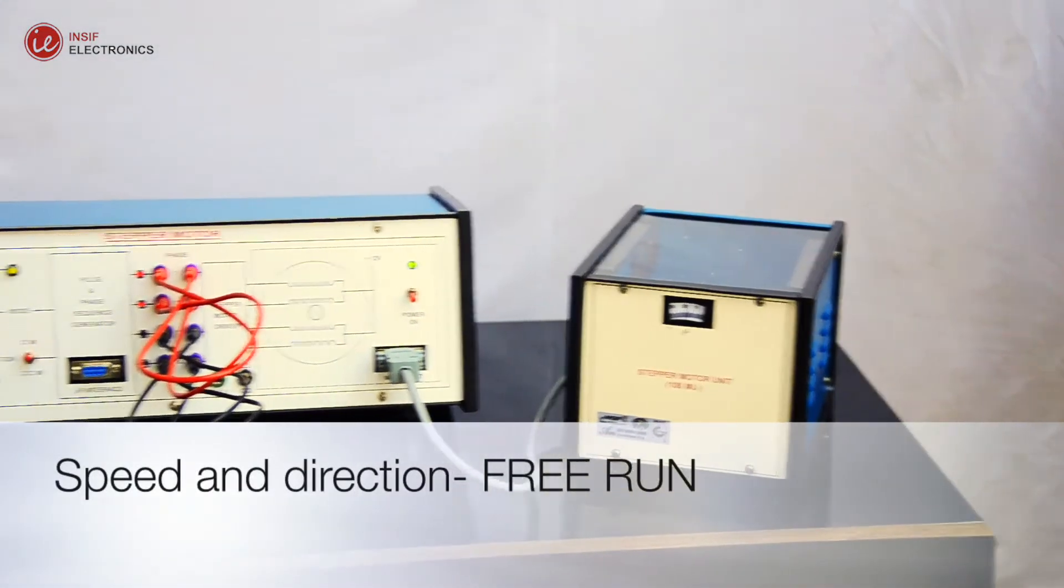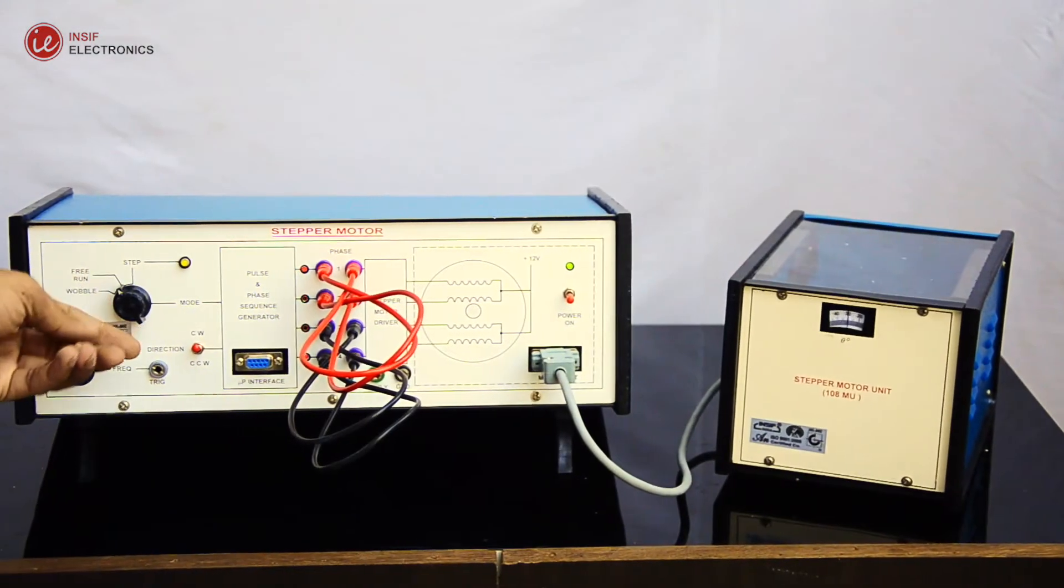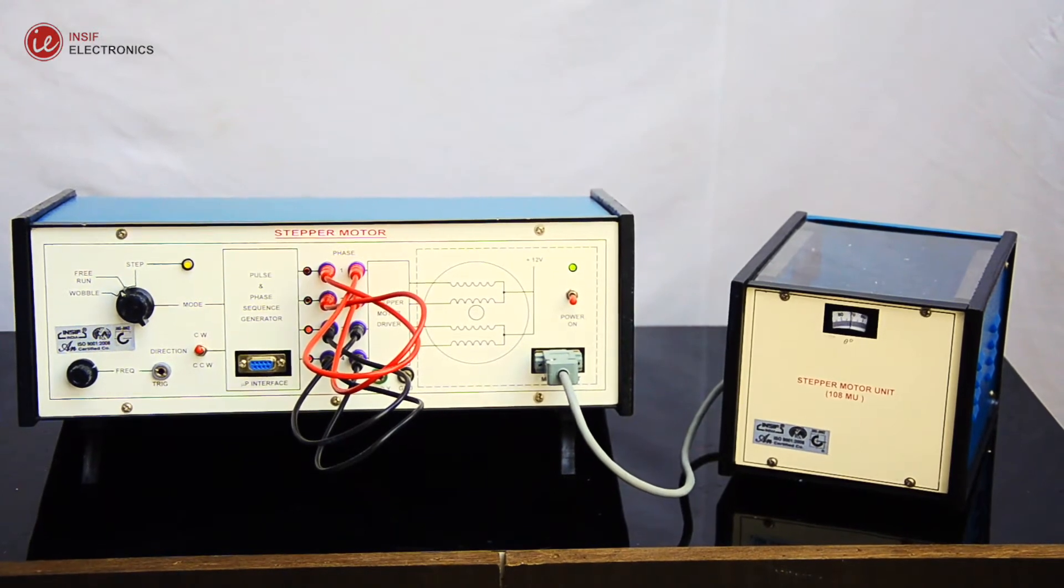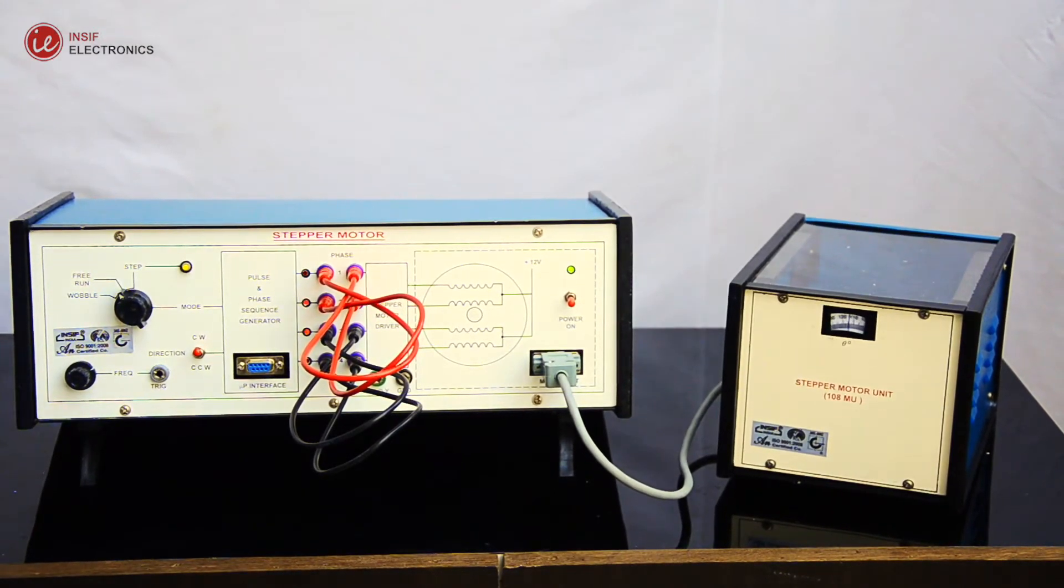Speed and direction. Select free run from the mode selector switch. Now you can see the motor is running free and the sequence is changing.